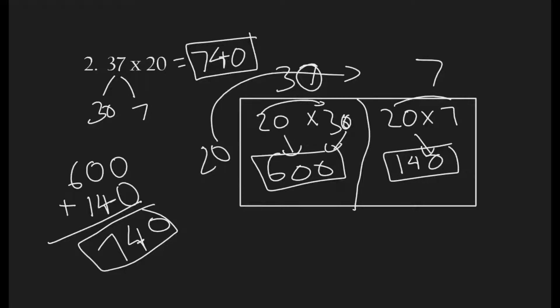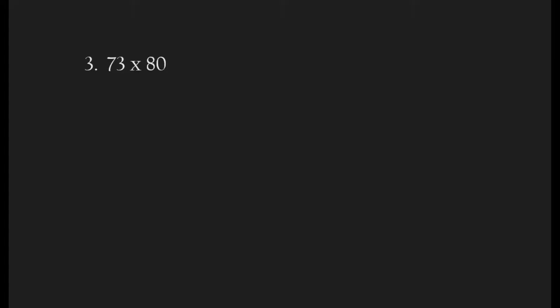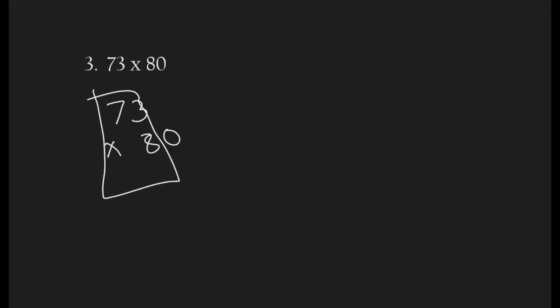Now let's try one final problem. You'll notice there is no box here — that's because we're not going to use a box for this method. What we are going to do is multiply like we normally do, but not exactly like that. So instead, we're going to do 73 times 80. We're going to put the 0 aside — we're just looking at the 8 part of the problem right now. Let's bring the 0 down over here because we're not looking at it right now.